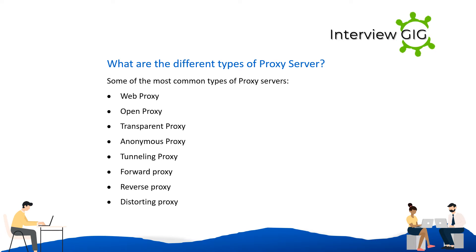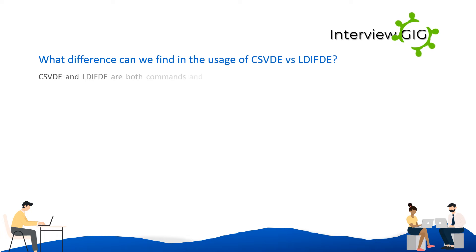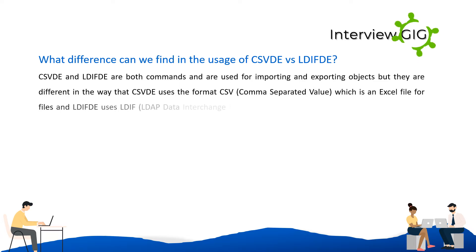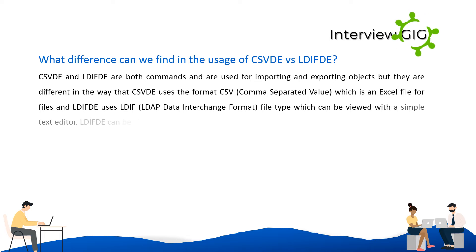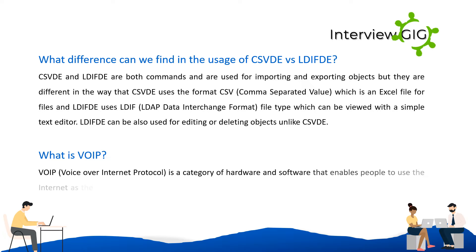What is the difference between CSV and LDIF? Both are commands used for importing and exporting objects, but they differ in format. CSV uses the comma-separated value format, which is an Excel file format. LDIF uses the LDAP Data Interchange Format file type, which can be viewed with a simple text editor. LDIF can also be used for editing or deleting objects, unlike CSV.